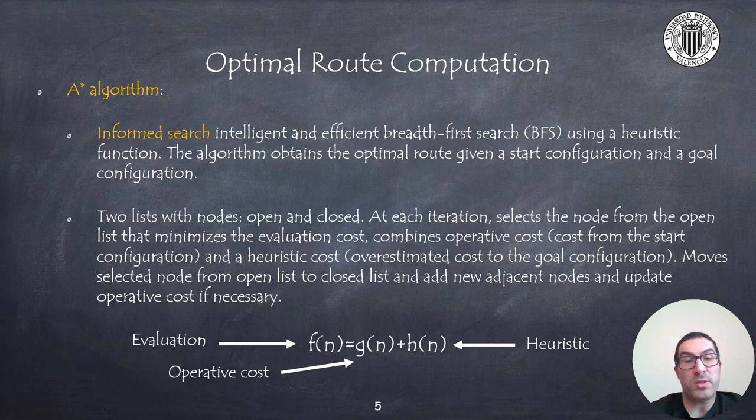Indeed, the operative cost represents, as before, the minimum cost to reach the node from the starting configuration, exactly as before, but here the A-star algorithm includes an heuristic cost, which is an overestimate of the cost for a given node to reach the goal configuration, usually using some kind of distance criteria.